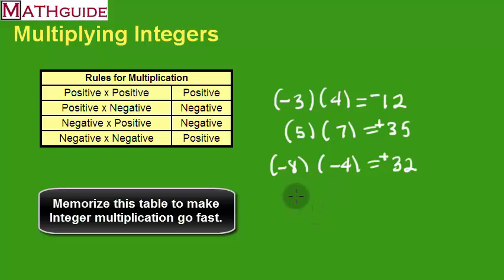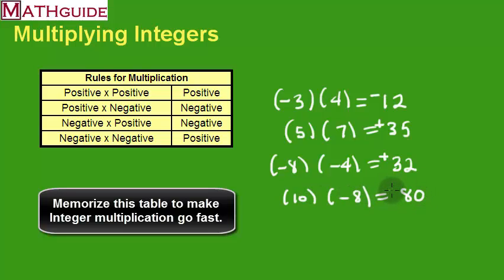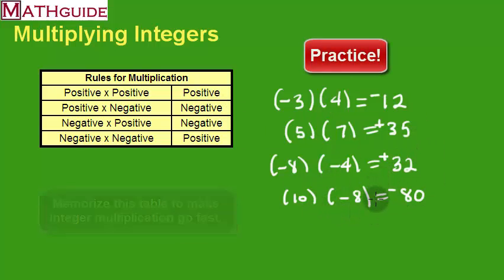Keep following these patterns. Like ten times negative eight: a positive times a positive would be just positive 80, but I've got a positive times a negative, so according to the table, the answer is negative 80. Keep practicing these skills until you get this right — that's the only way to understand how to multiply integers. Make sure you go back to MathGuide.com, check out our other videos, our lessons, and our interactive quizzes. Take care.